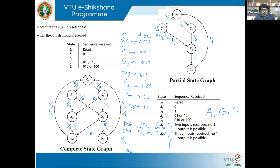This is one of the applications — the sequence detector. We took two examples and saw how a Mealy machine can be constructed, and how a Moore machine can be constructed for Example 1. For Example 2, we dealt with two different sequences for which the output should be 1. In the next session, we will take up another application. Thank you.